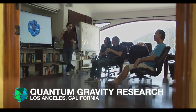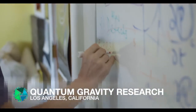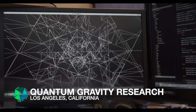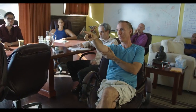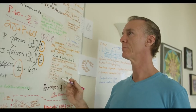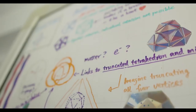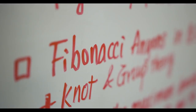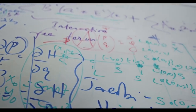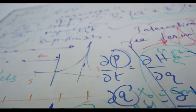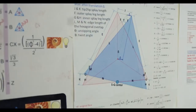And such a theory is what the physicists and mathematicians of Quantum Gravity Research in Los Angeles are working on. They call it emergence theory. And it will, really for the first time ever, provide an explanation for the speed of light and the other constants, such as Planck's constant and the fine structure constant.